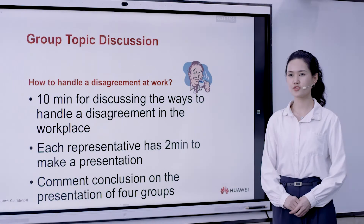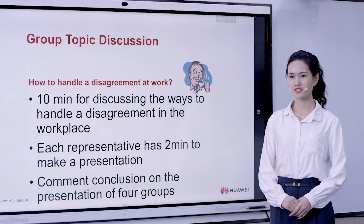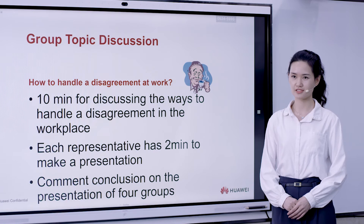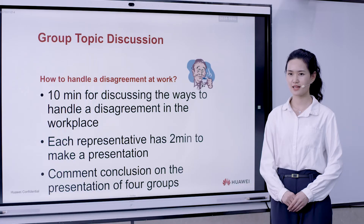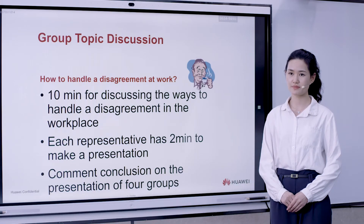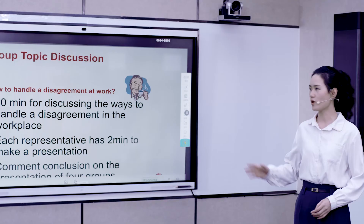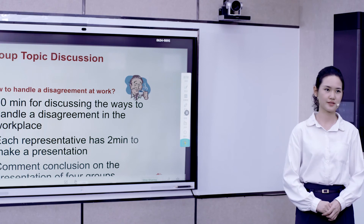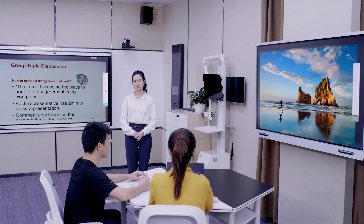In the local group seminar scenario, multi-screen interaction helps teachers and students to easily share content. Flexible group collaboration helps students quickly obtain information, collaborate with others, and solve problems with creative thinking. In this classroom, one large integrated touch screen is set for teachers, and four integrated touch screens are set for group discussion.